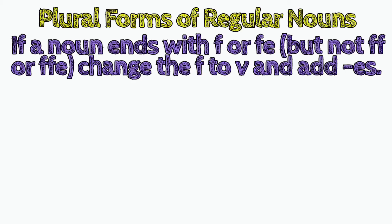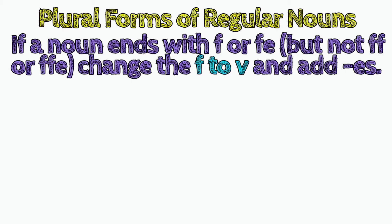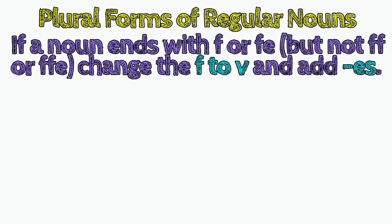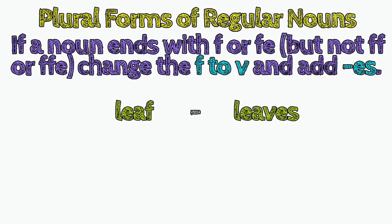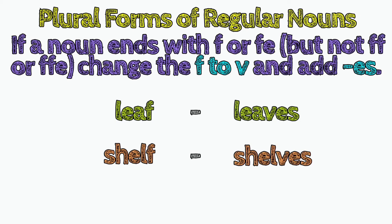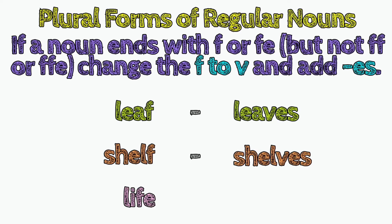Sixth, if a noun ends in F or FE, change the F to V and add ES. Examples: leaf, leaves; shelf, shelves; life, lives.